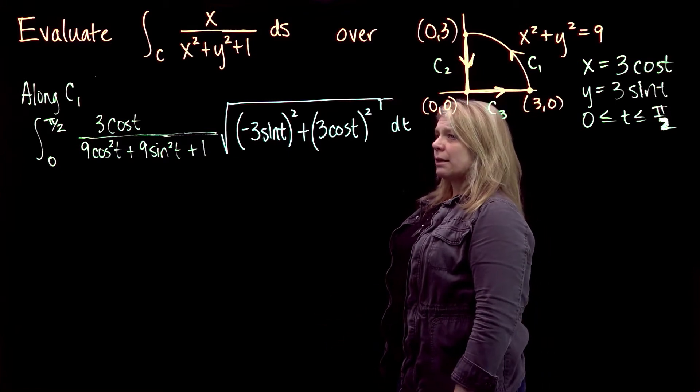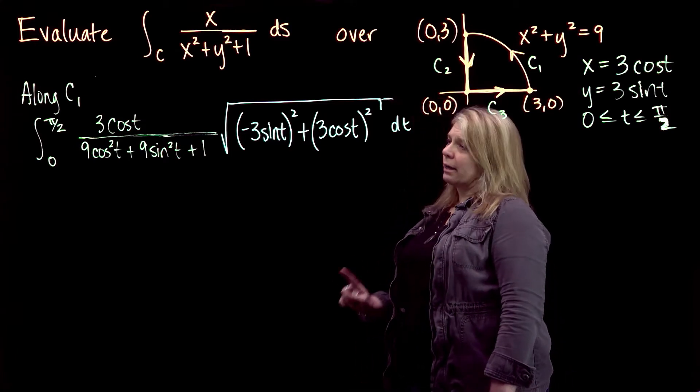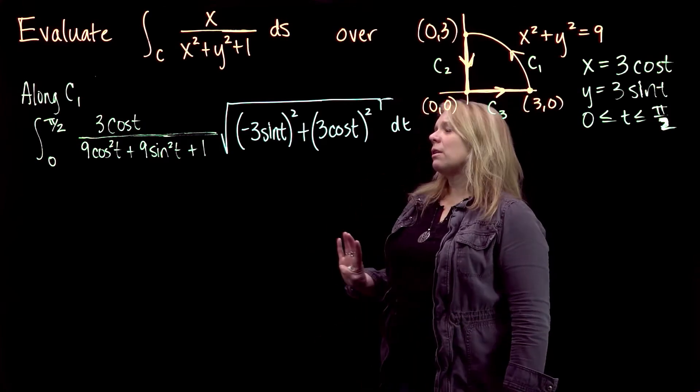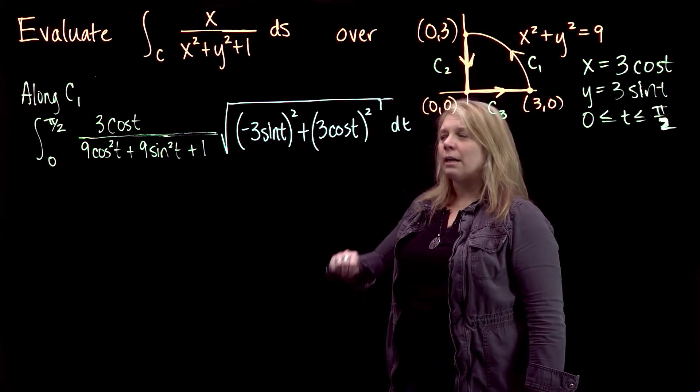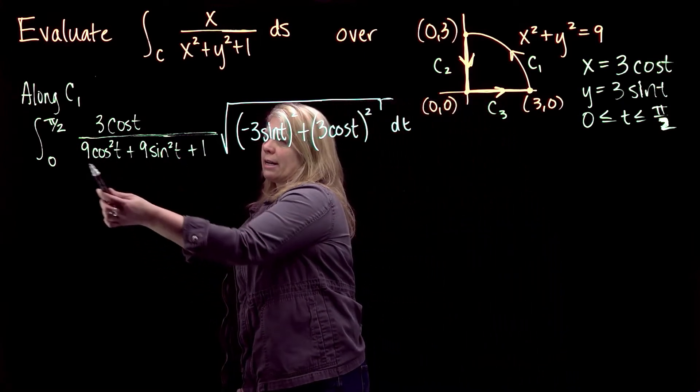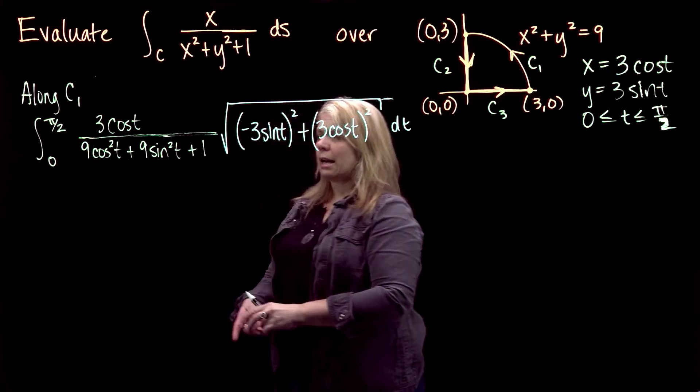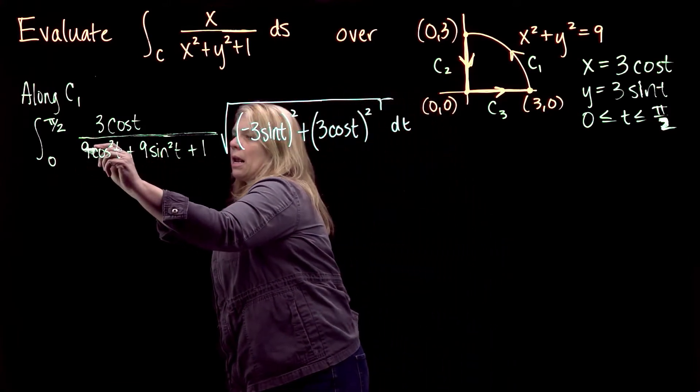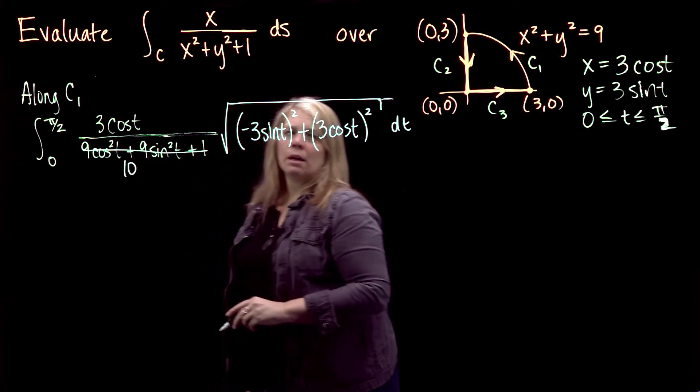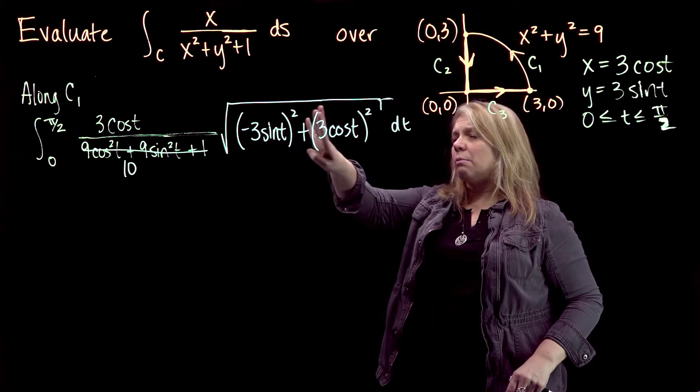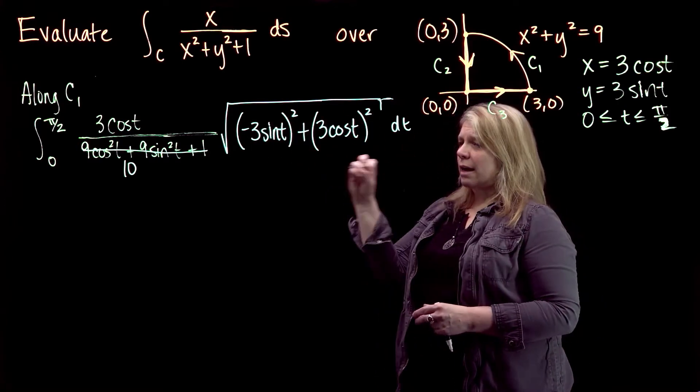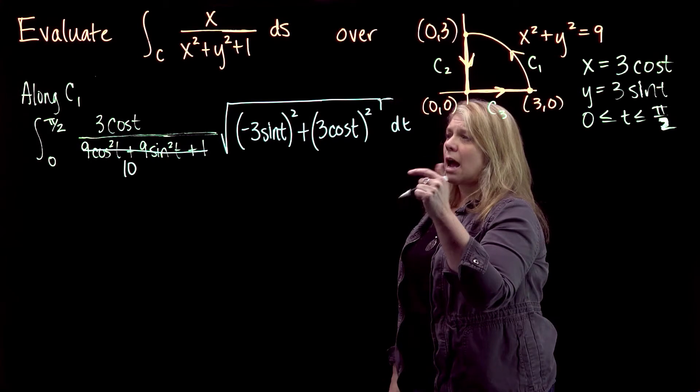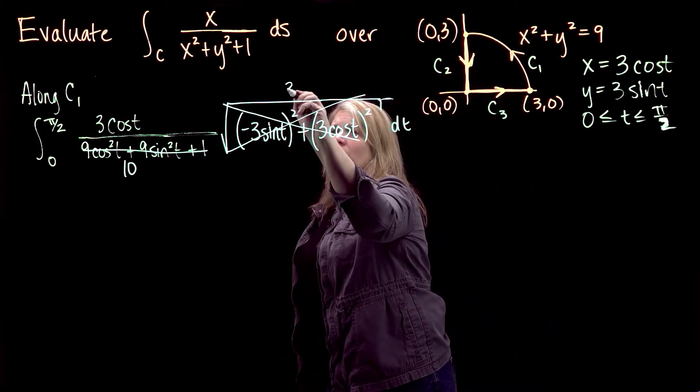Now I need to evaluate this integral, which looks like a mess, but hopefully you recognize Pythagorean identity when you see it. I have Pythagorean identity in the denominator, so I can factor 9 out of these two terms, and I'm left with 9 times 1 plus 1. So this denominator simplifies to just 10. Inside the radical, I will have 9 sine squared t plus 9 cosine squared t. I can factor 9 out of that, so I'll just be left with 9 times 1. Since I have square root of 9, this all can be rewritten as 3.